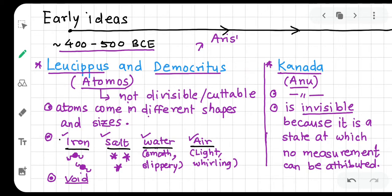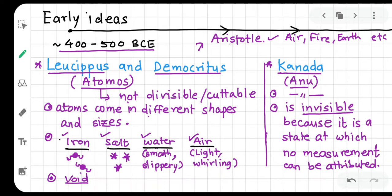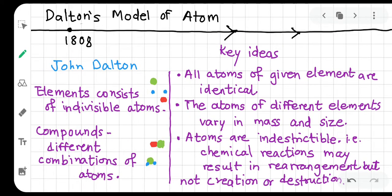Aristotle rejected this atomic theory entirely. Aristotle was the most prominent thinker of his time, and he believed that everything is made up of basic elements — air, fire, earth, and water. We also know this concept from Indian philosophy as the five elements. Because Aristotle was so prominent, Democritus's ideas were sidelined for many centuries.